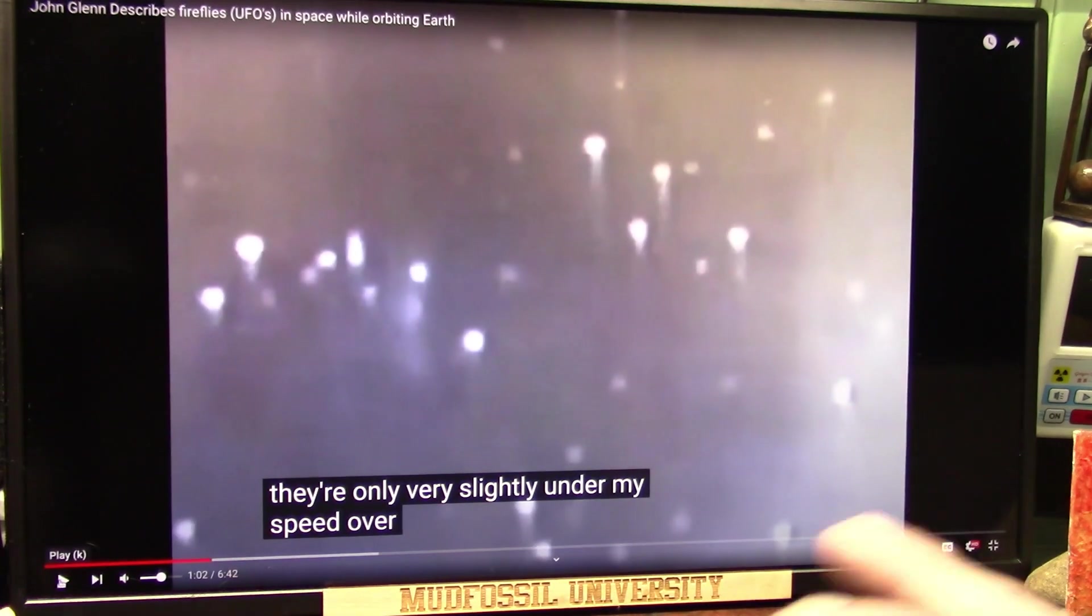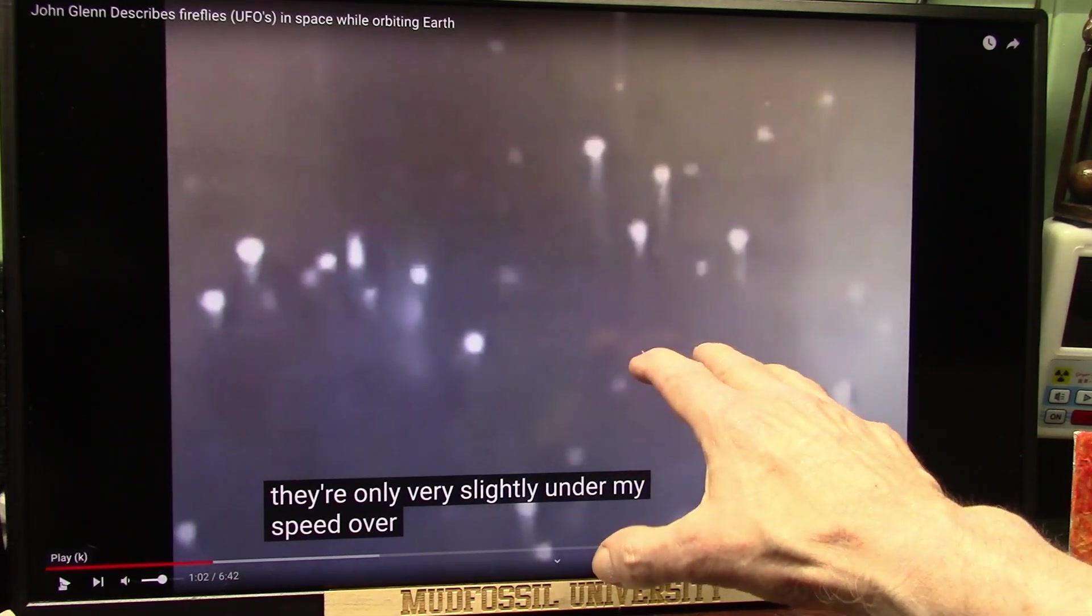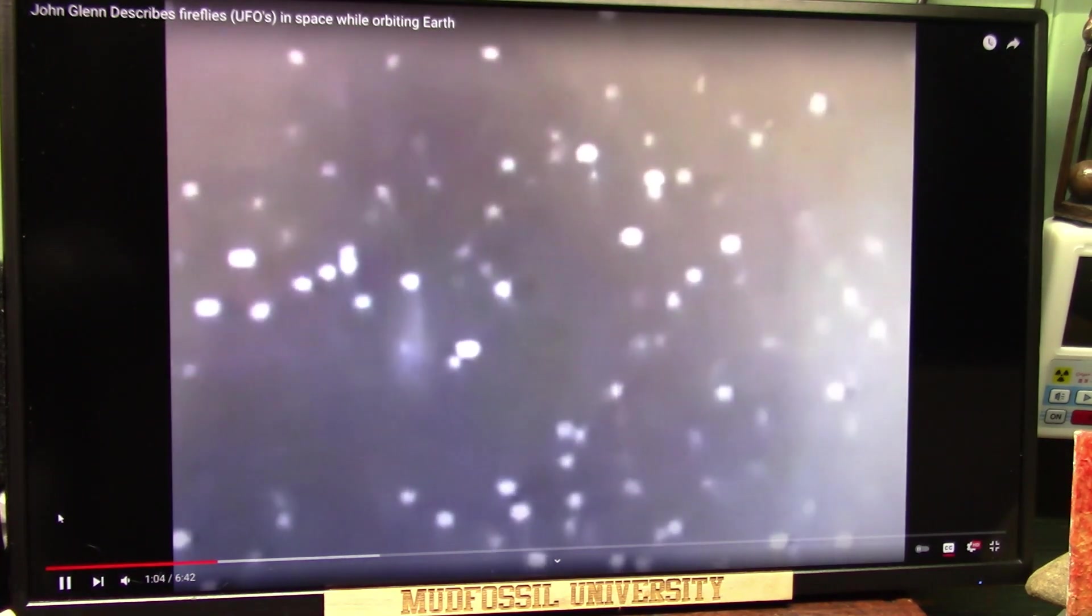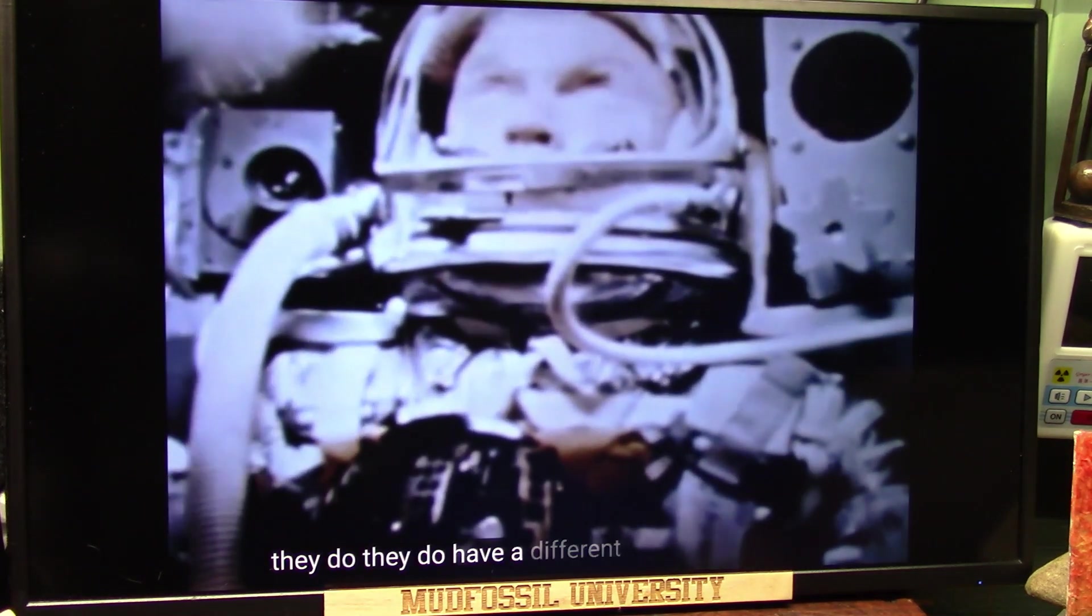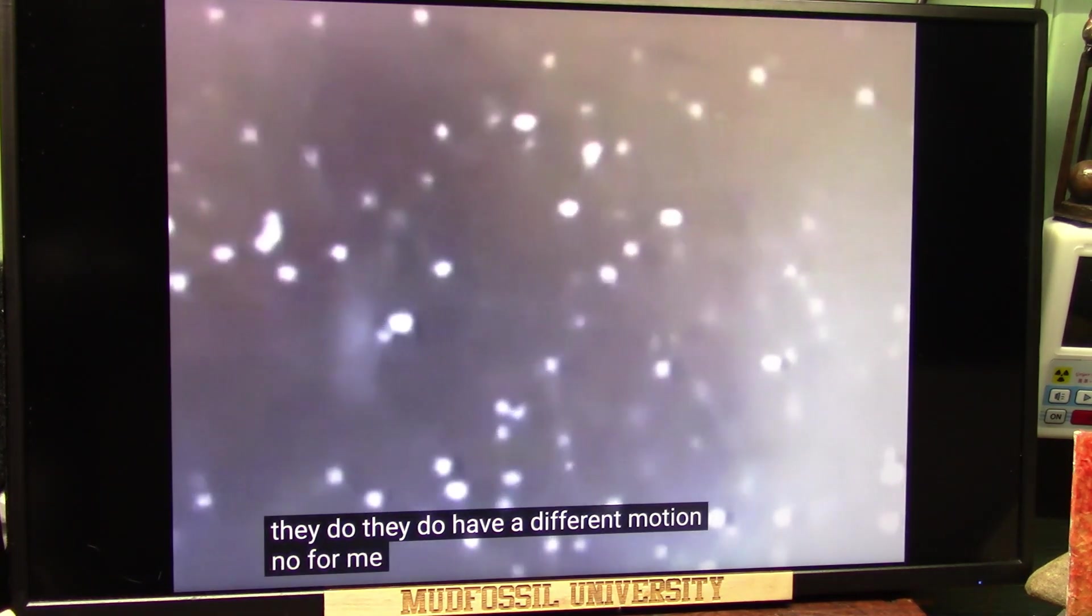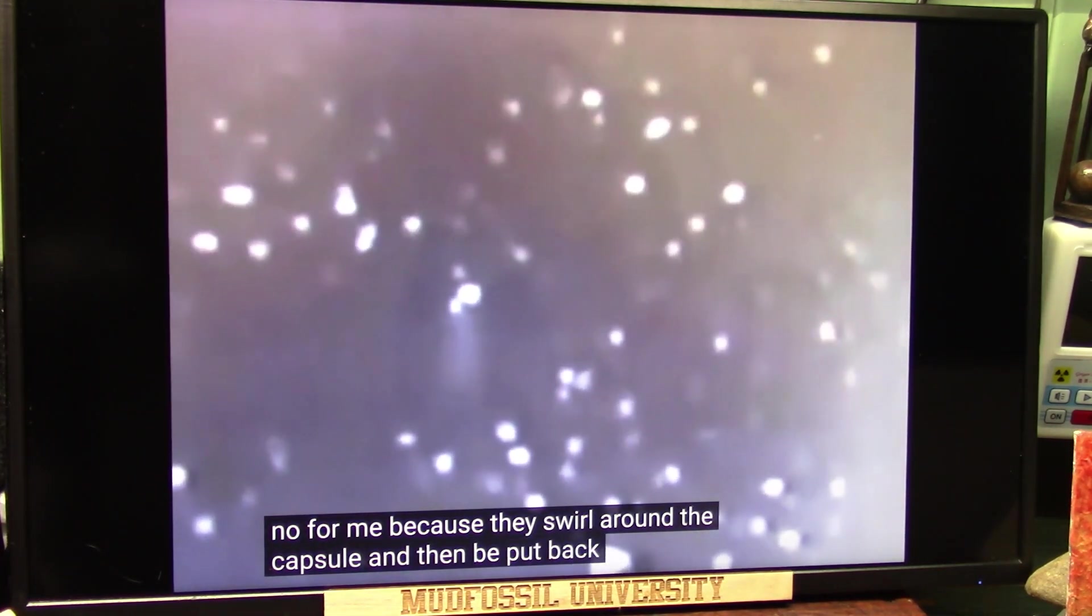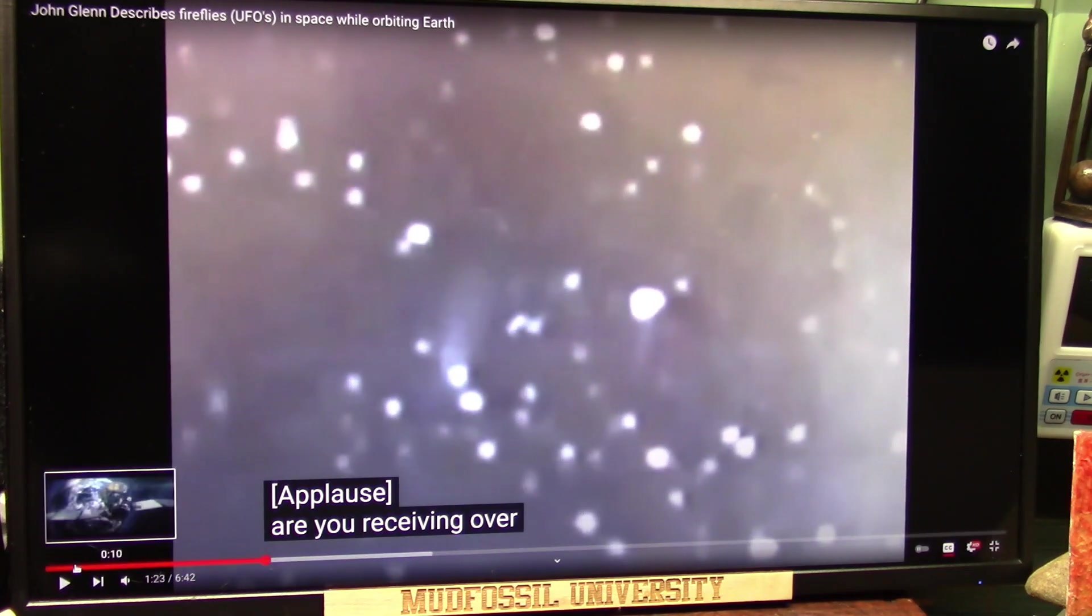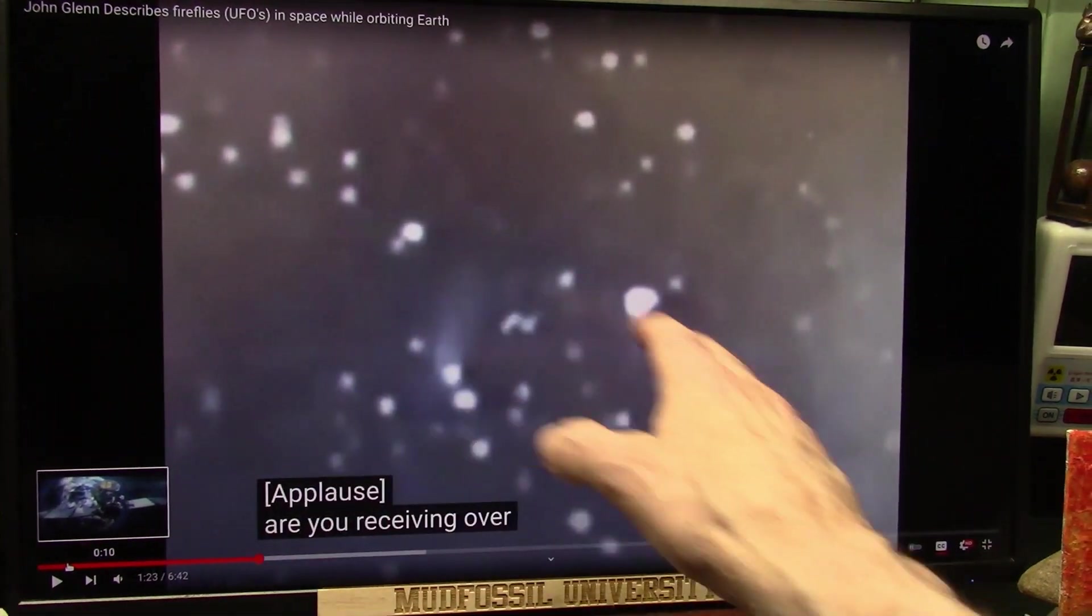He's talking to them, and they can't hear him anymore because he is in the midst of all these ionic particles. That interferes with his radio reception. Now, listen to this. They do have a different motion, though, from me because they swirl around the capsule and then depart back the way that I am looking. Are you receiving? You're not receiving because they can't receive. He is in that layer of scrub zone, which is the ionosphere.